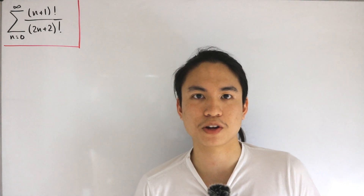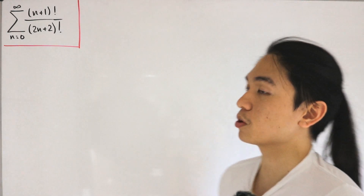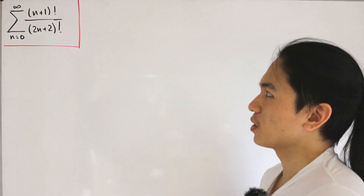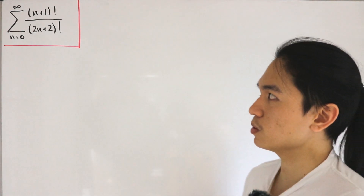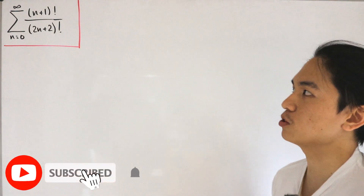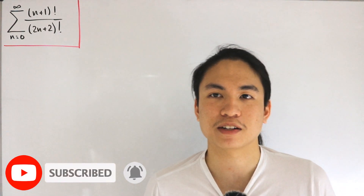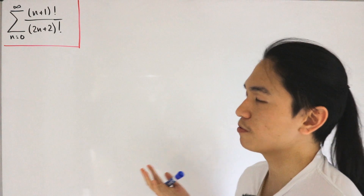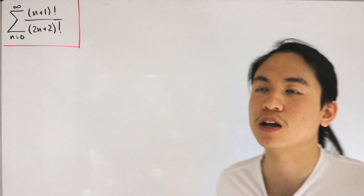Welcome back. We have an infinite sum dealing with factorials. The sum starts with index n equals 0 of (n+1)! divided by (2n+2)!. The first step that many of you can figure out is that with factorials we can utilize the definition of the gamma function.